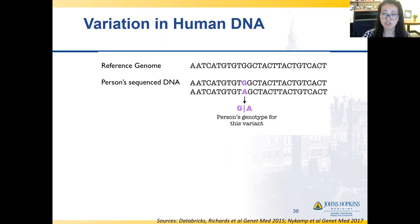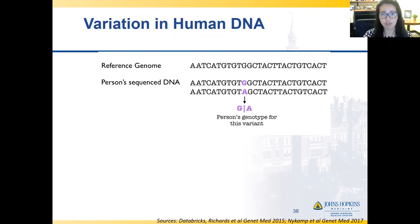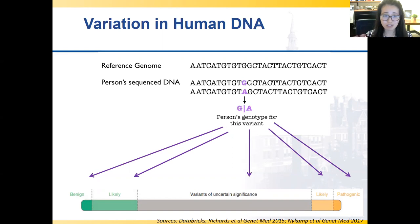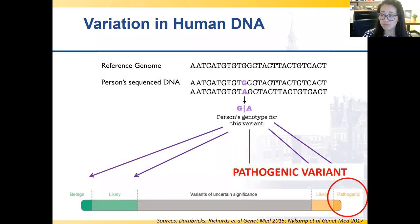Now talking about variant interpretation. When someone's DNA is sequenced, their genotype is found and compared to a reference genome. In 2015, the American College of Medical Genetics made standard guidelines for variants to be classified into one of five categories: benign, likely benign, variant of unknown significance (VUS), likely pathogenic, and pathogenic. Before 2015, reports were a lot more varied — sometimes variants were called 'mutations' or many other things — so the terminology was not as standardized.